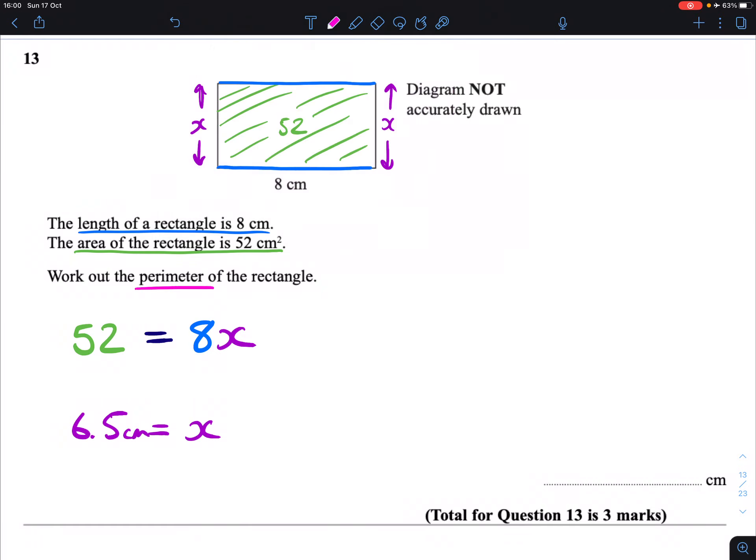And then that means we can get the perimeter by adding together these 6.5s along with the 2 8s for top and bottom. And that will give us a combined perimeter of 29 centimeters. Done.